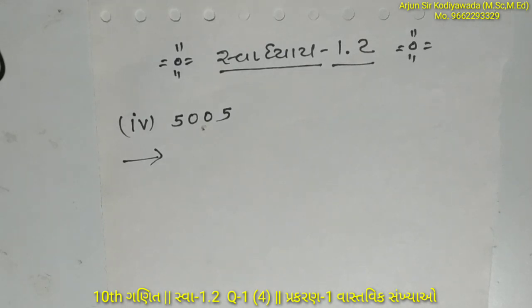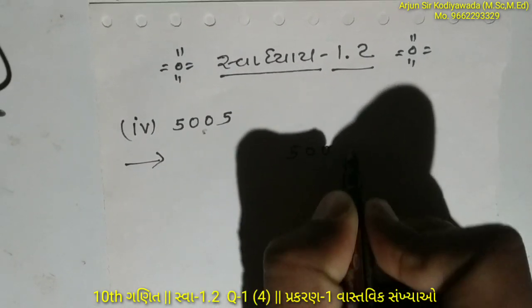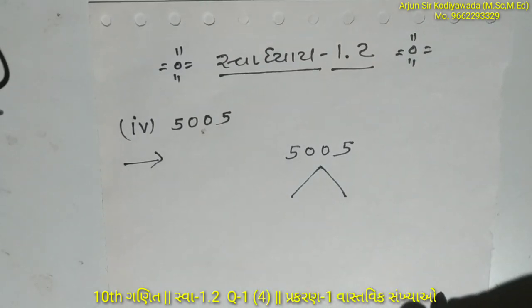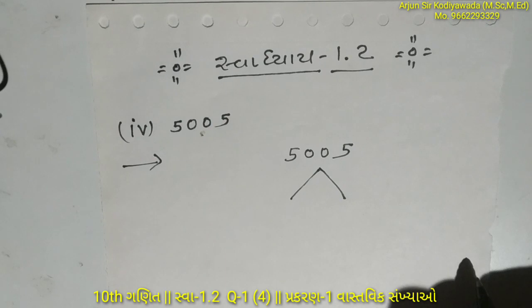First, we need to divide this number by prime factors. Let's start by dividing 5005 by 5. When we divide by 5, we get 1001.